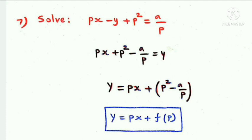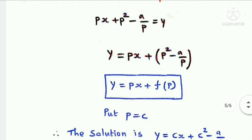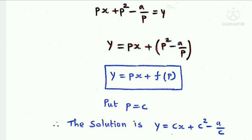Next question: solve px - y + p² = a/p. Rearranging gives y = px + p² - a/p. This is in Clairant's form, y = px + f(p). Putting p equal to c, the solution is y = cx + c² - a/c.